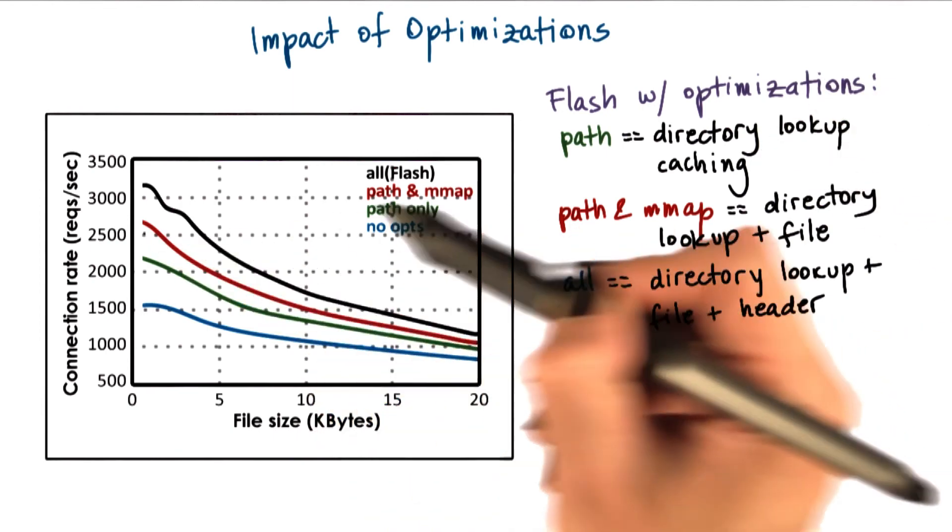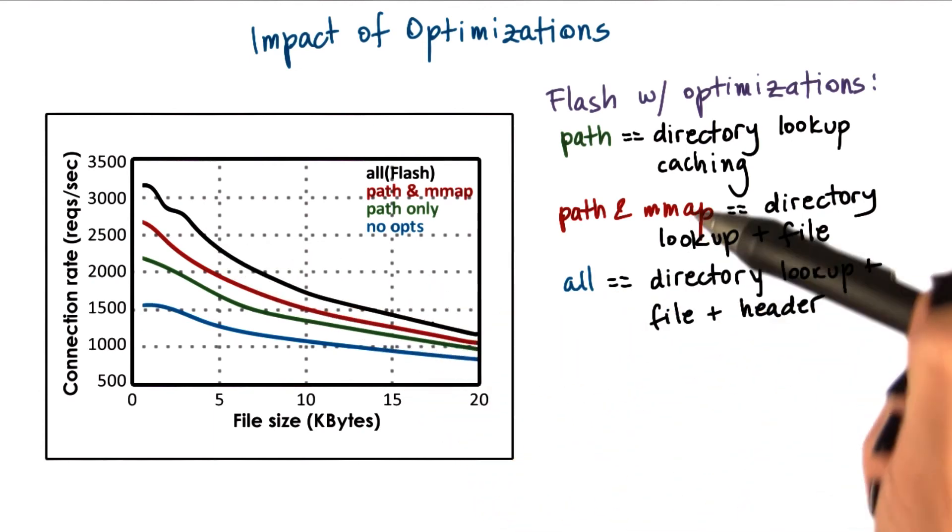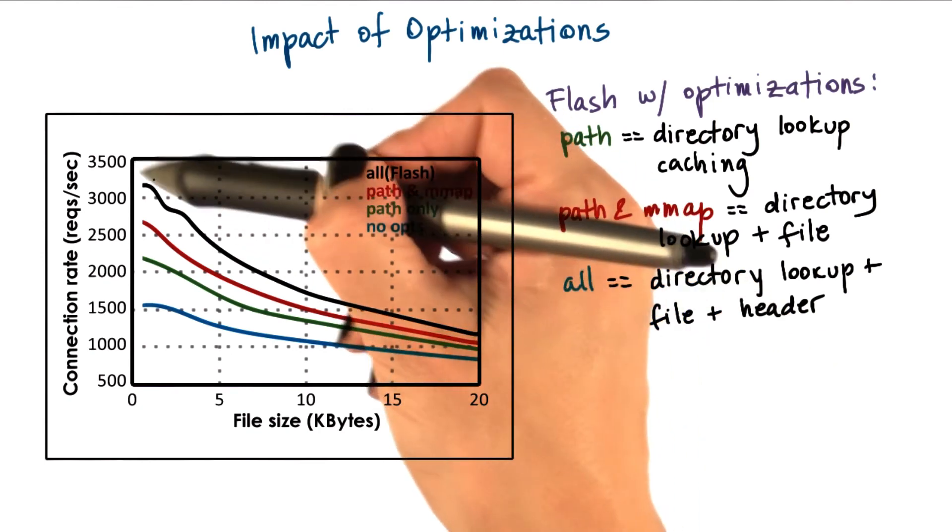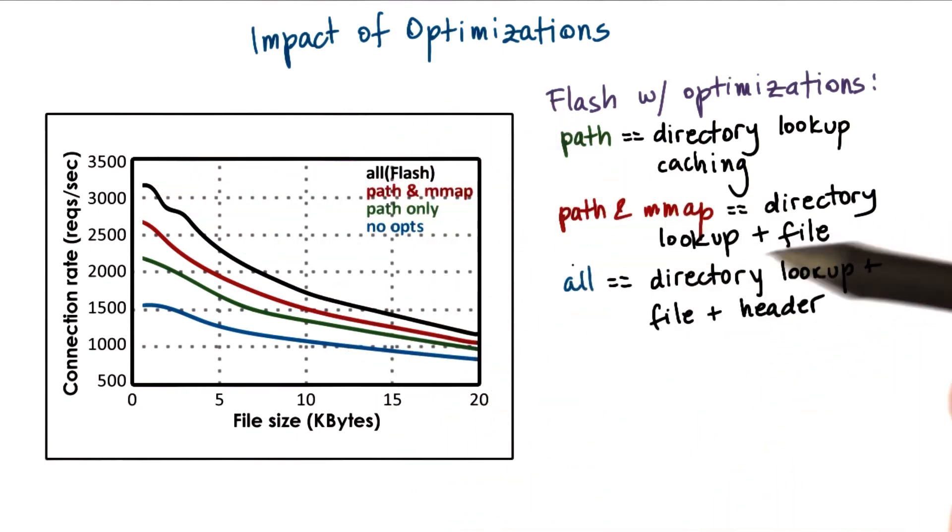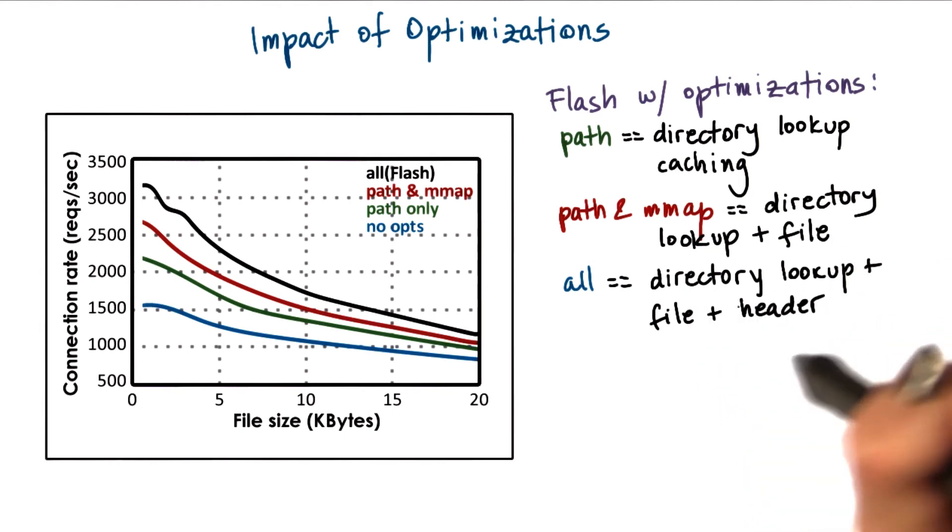Then the red line here, the path and mmap. So this includes caching of the directory lookup plus caching of the file. And then the final bar, so the final line, the black line that includes all of the optimization. So this is the directory lookup, the file caching, as well as the header computations of the file.